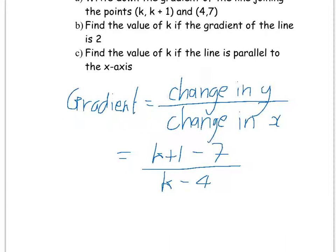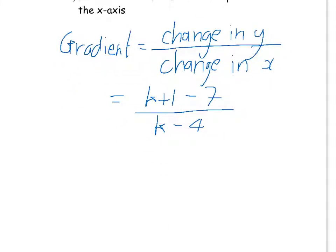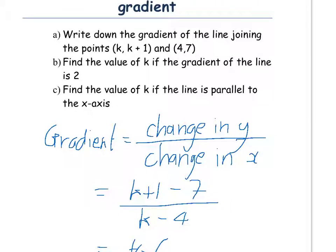You can just tidy up that top bit, because 1 minus 7 is minus 6. So, k minus 6 over k minus 4. And that's the general equation for the gradient of these two points.